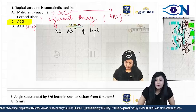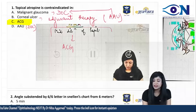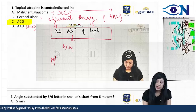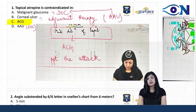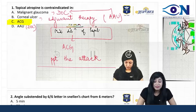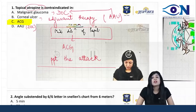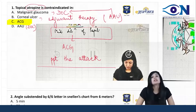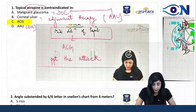In acute congestive glaucoma, it is the mid-dilatation of the pupil that will precipitate the attack. Atropine, being a mydriatic and cycloplegic, will precipitate the attack of acute congestive glaucoma. That is why atropine is contraindicated in acute congestive glaucoma.